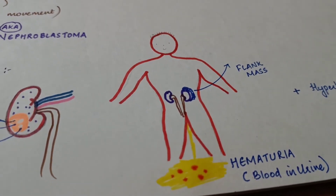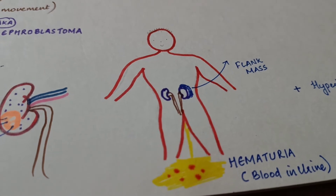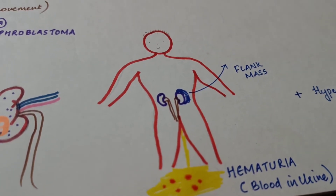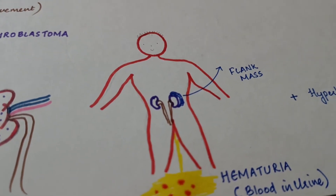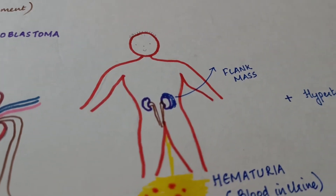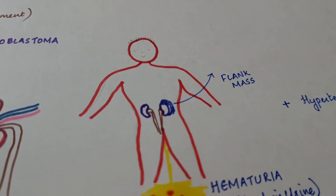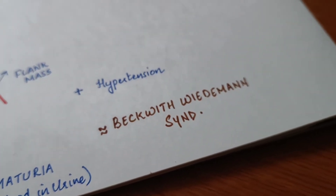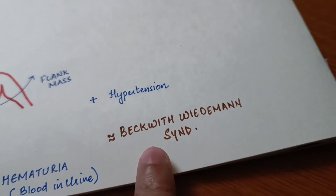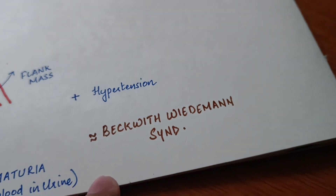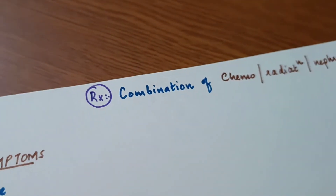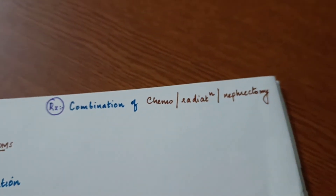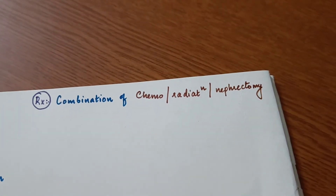Wilms tumor is not a specific feature of WAGR syndrome, as this tumor also occurs in healthy children and in other syndromes such as Beckwith-Wiedemann syndrome. Treatment of Wilms tumor is a combination of chemotherapy, radiotherapy, and nephrectomy.